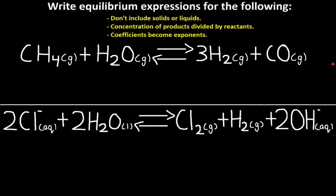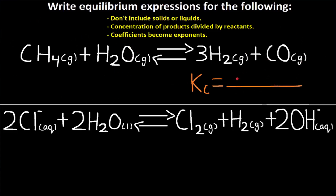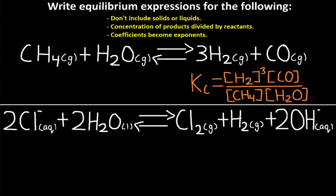Let's write equilibrium expressions for the following reactions. In yellow are tips to help guide you, so you can pause this video and try these yourself, or work along with me. First, we don't include solids or liquids. We have no solids or liquids in this reaction, so we include everything. Kc is equal to the concentration of products divided by reactants, and coefficients become exponents. So we have H2 to the power of 3 because it has a coefficient of 3, multiplied by CO, divided by the reactants CH4 multiplied by H2O. They both have no coefficients, so no exponents.